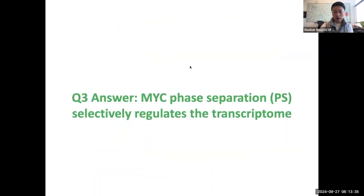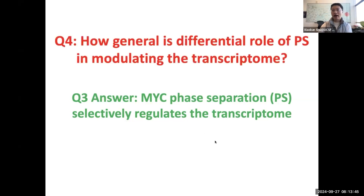By comparing phase-separated versus non-phase-separated samples, we discovered that phase separation regulates about 100 genes among the over 6,000 genes regulated by MYC. So the answer to the third question is that MYC phase separation selectively regulates the transcriptome.